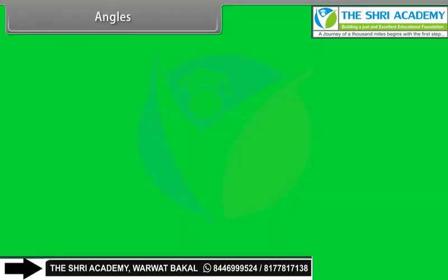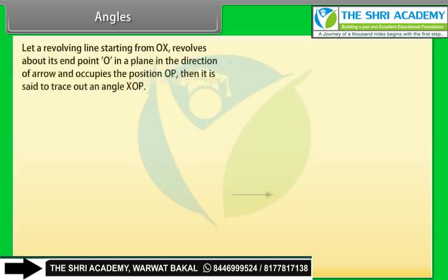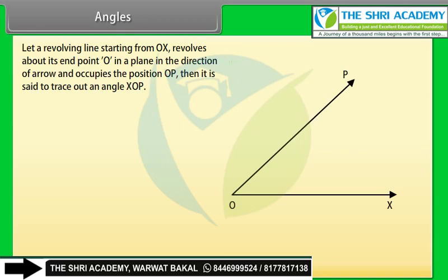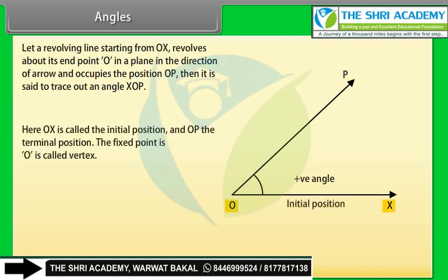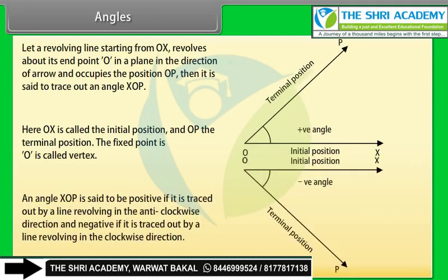What are angles? Let a revolving line starting from OX revolve about its end point O in a plane in the direction of an arrow and occupy the position OP. Then it is said to trace out an angle XOP. Here OX is called the initial position and OP the terminal position. The fixed point O is called the vertex. An angle XOP is positive if traced in the anticlockwise direction and negative if traced in the clockwise direction.